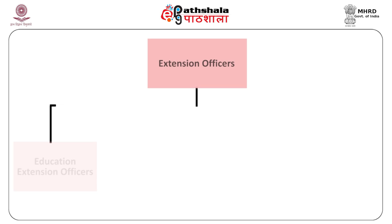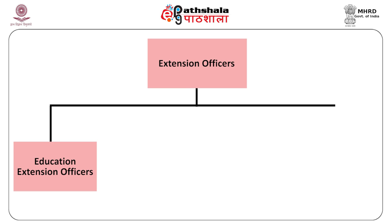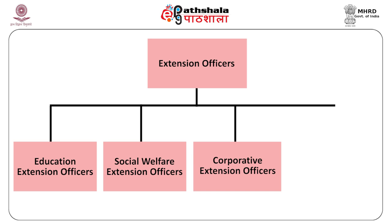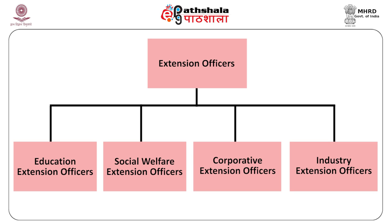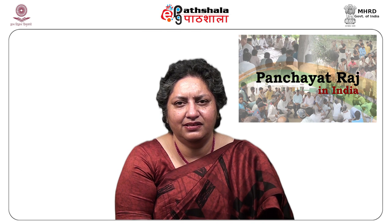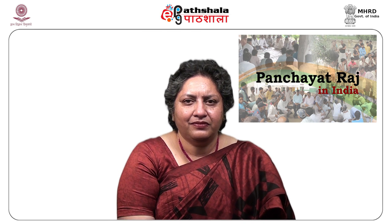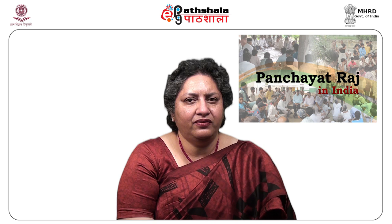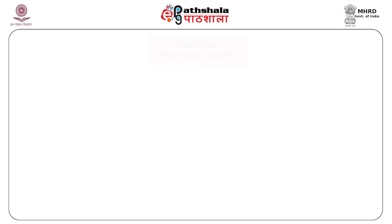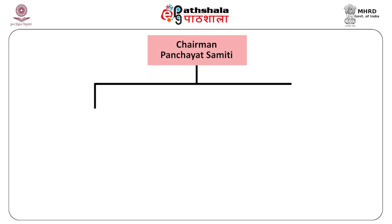For example, there is an Education Extension Officer, a Social Welfare Extension Officer, a Cooperatives Extension Officer, and an Industry Extension Officer. The number of extension officers depends upon the needs of a particular area, along with the Block Development Officer.